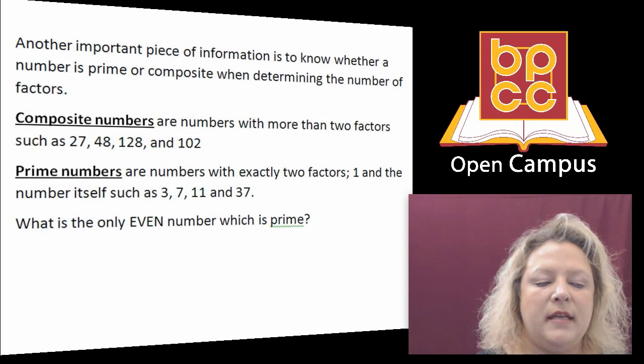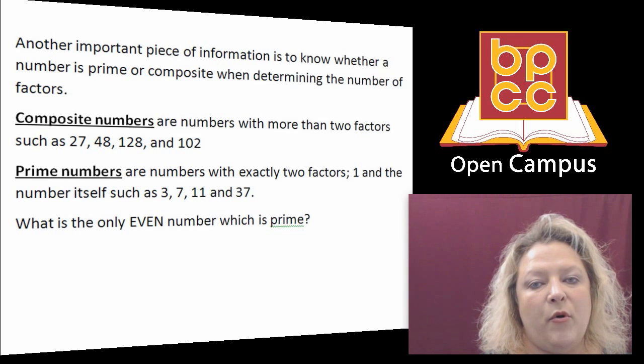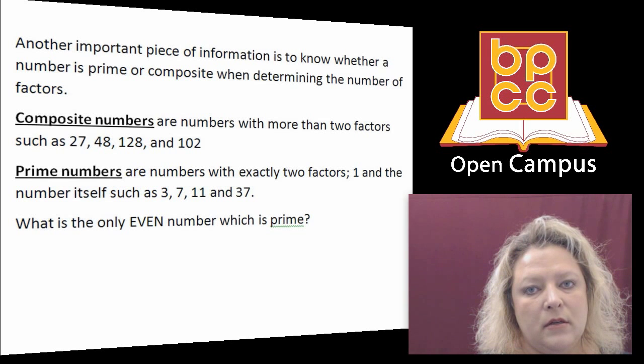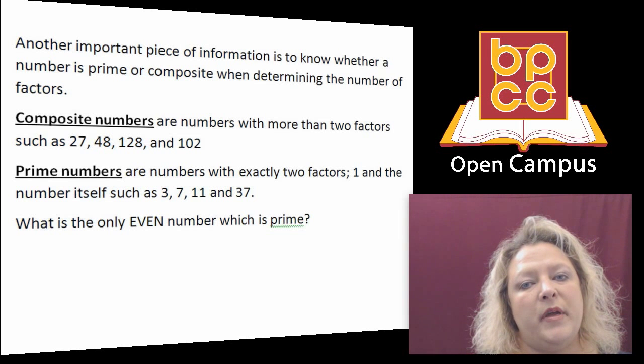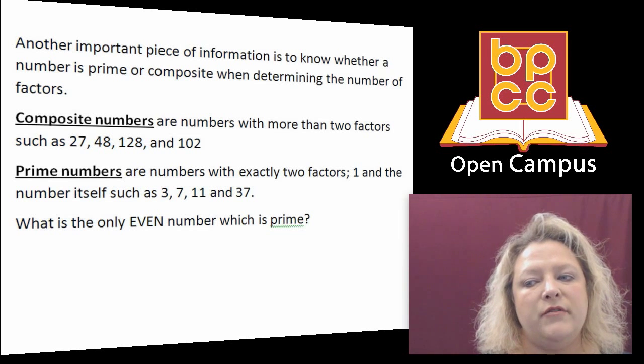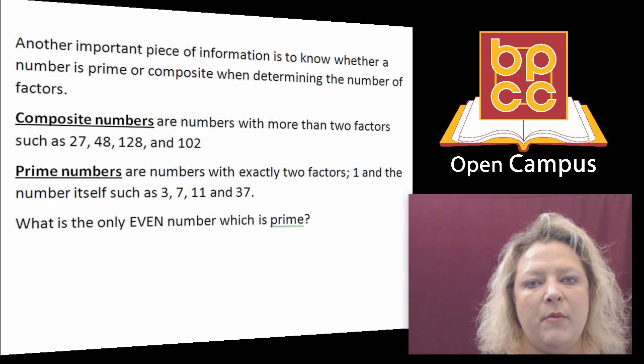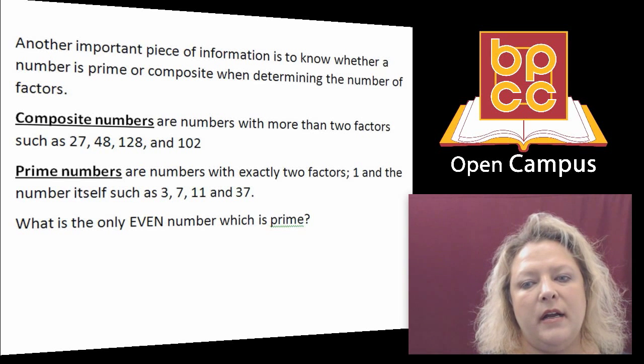Composite numbers are numbers that have more than two factors. Four is a composite number because one times four gives you four as well as two times two gives you four. If you can find at least just one other number besides one that goes into there, it is composite.